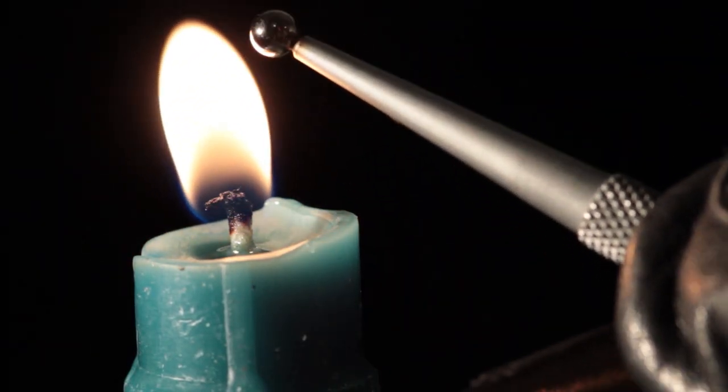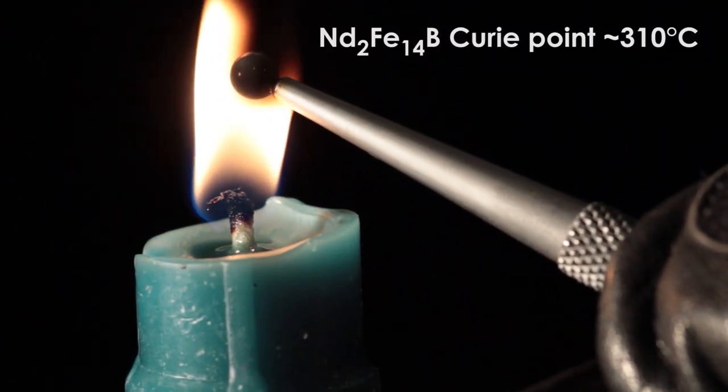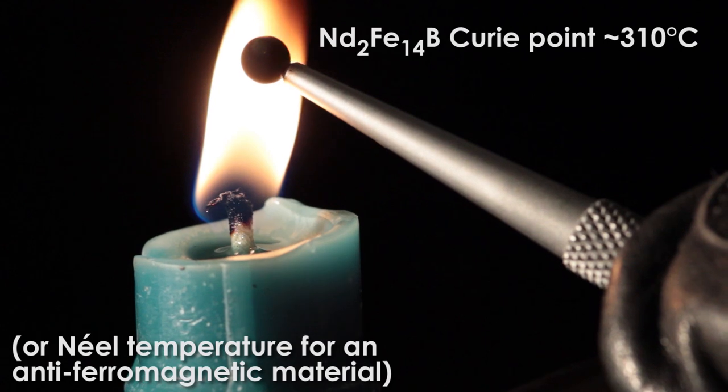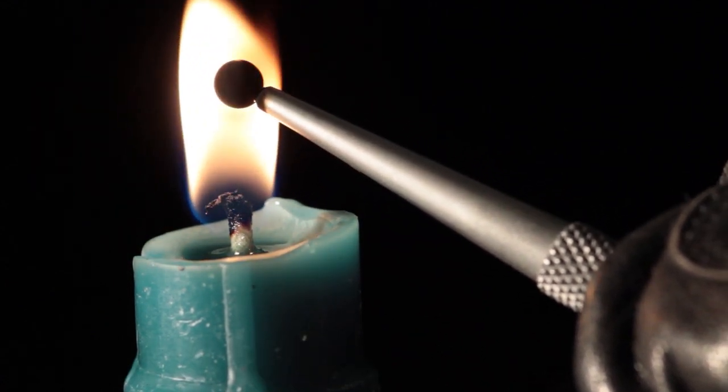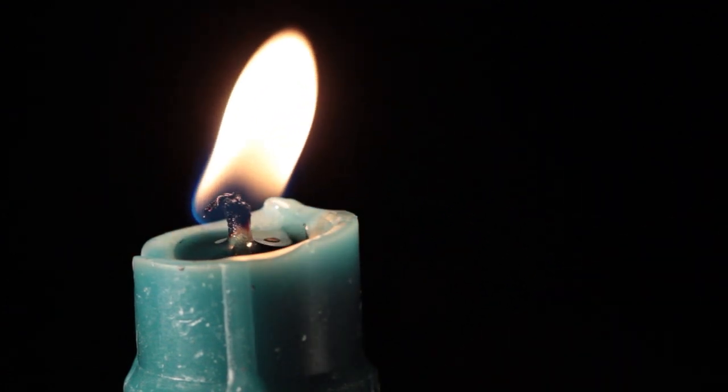So to destroy a magnet, you just need to heat it up past its magnetic melting point, called the Curie temperature. It probably won't look like much is happening, but once the atoms are jiggling around enough, their magnetic fields will no longer all point in the same direction. Magnet destroyed.